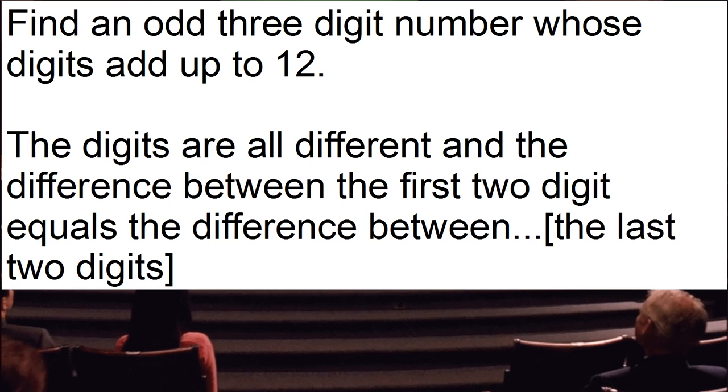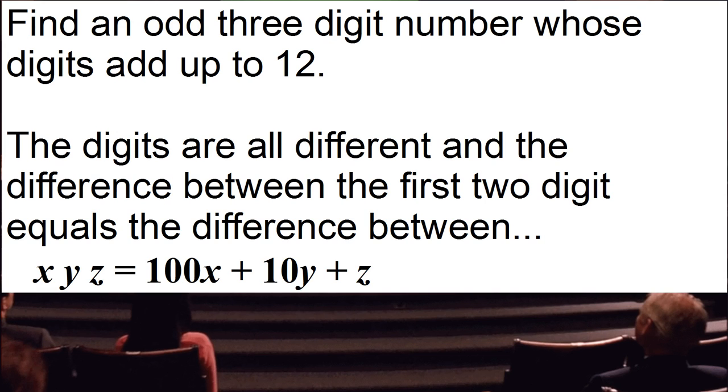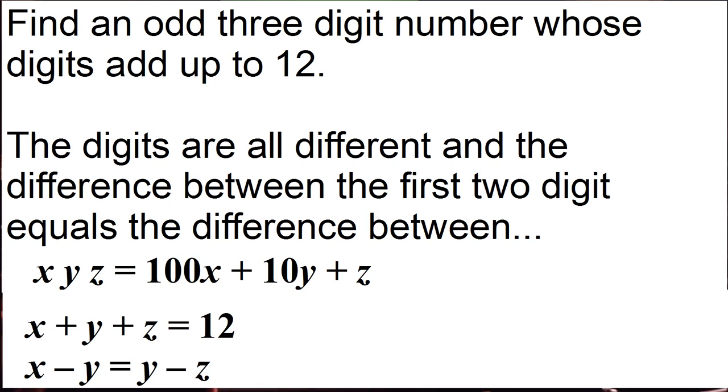The second question is more interesting. Find an odd three-digit number whose digits add up to twelve. So a three-digit number x, y, and z we can think about as a hundred x plus ten y plus z. So if we want to add the sum of the digits, that's saying x plus y plus z is equal to twelve.